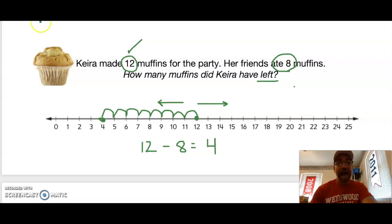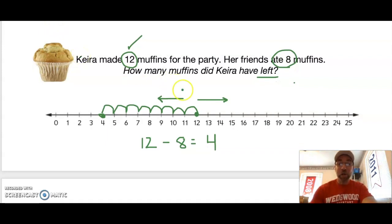Let's see how you did. I started at 12 and then I hopped 8 muffins to the left. I was heading toward the number zero, and after I hopped 8 spaces I landed on 4. So Kira started with 12, subtract 8, and equals 4 muffins left. Awesome job!